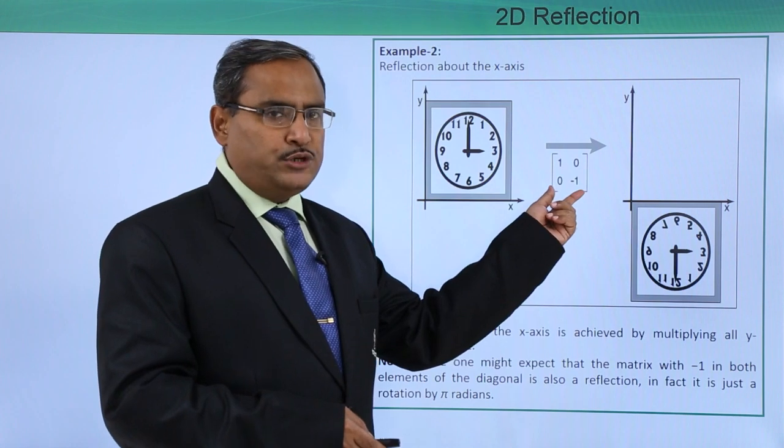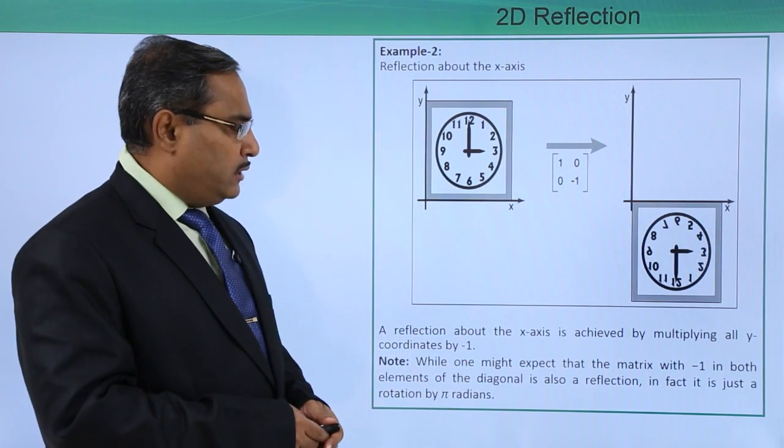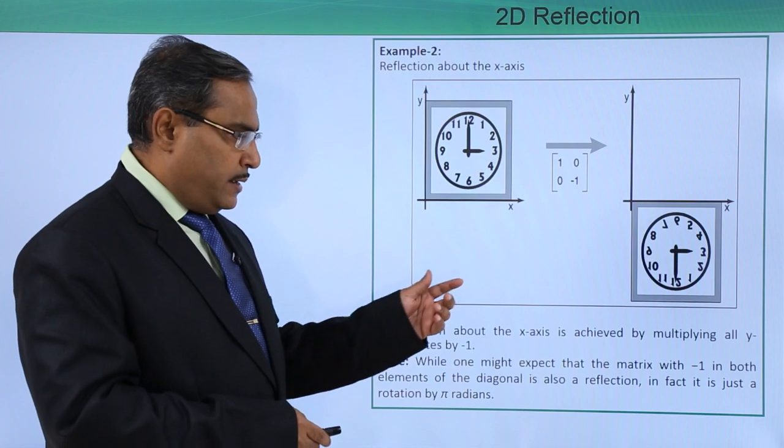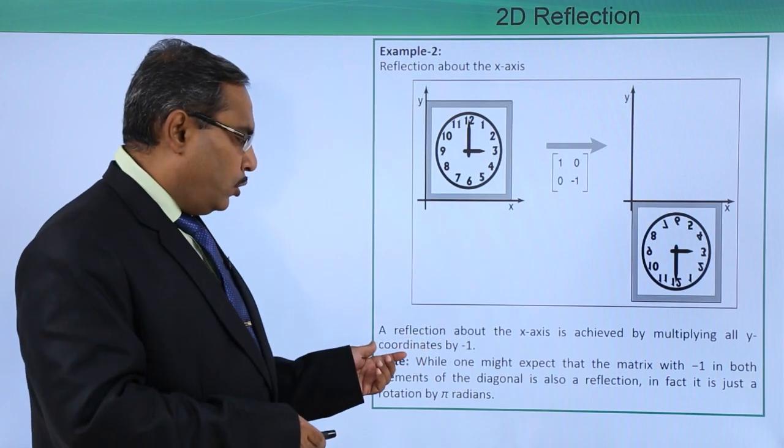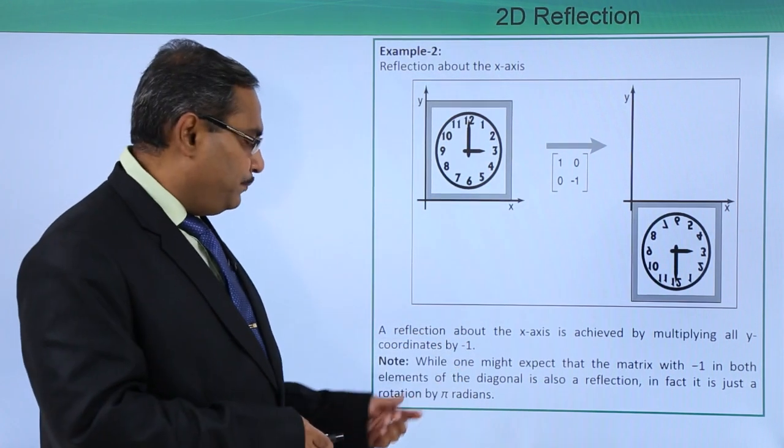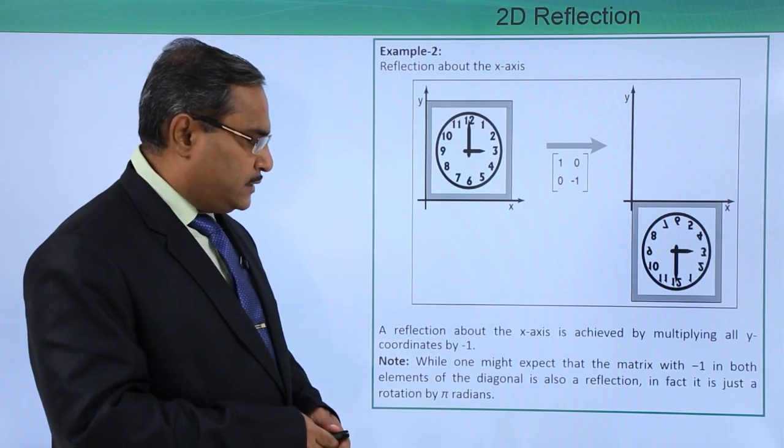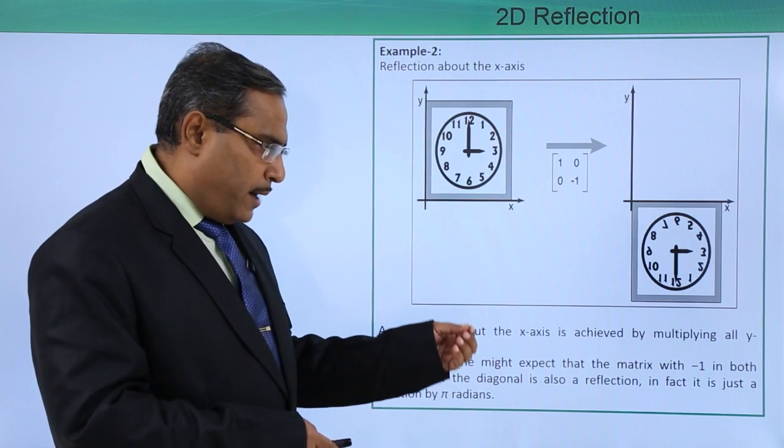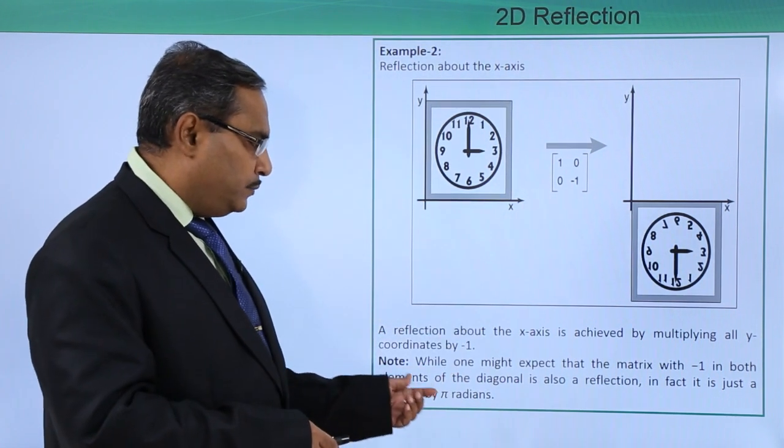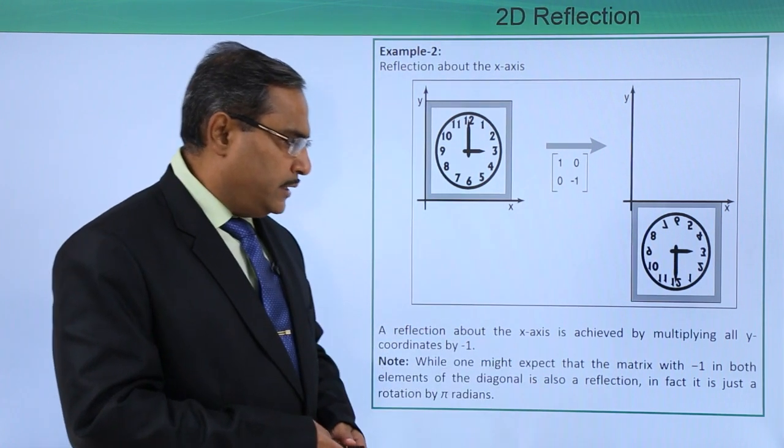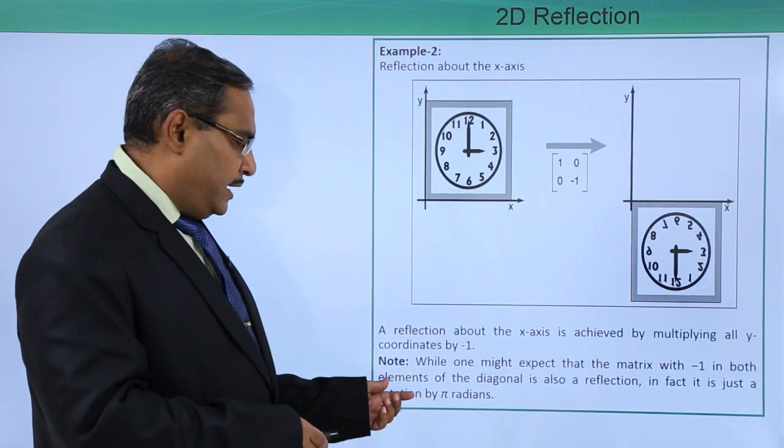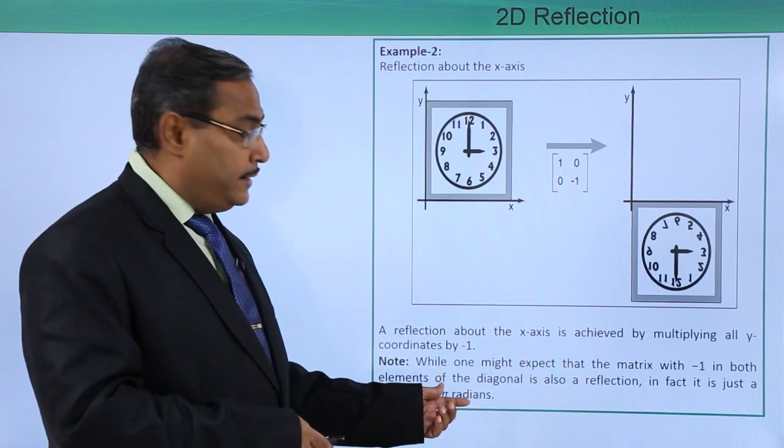This is the transformation matrix for us. A reflection about the x-axis is achieved by multiplying all y coordinates by minus 1. While one might expect that the matrix with minus 1 in both elements of the diagonal is also a reflection, in fact it is just a rotation by pi radians.